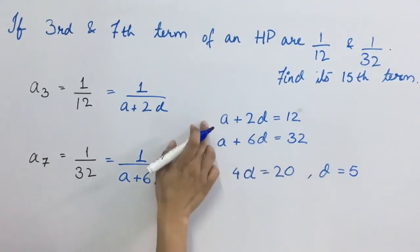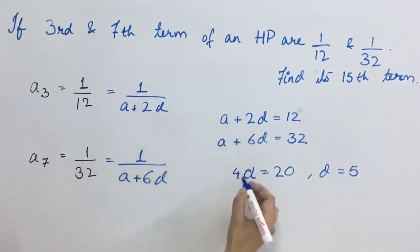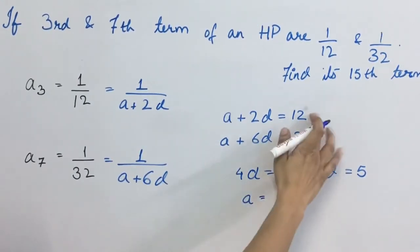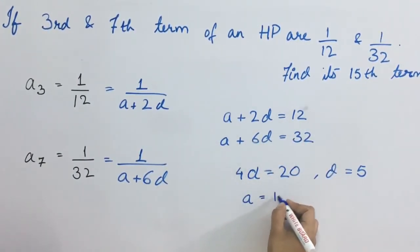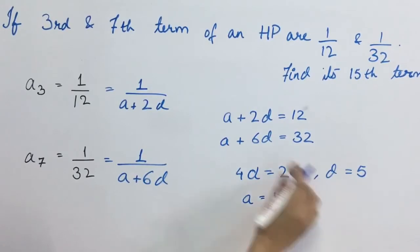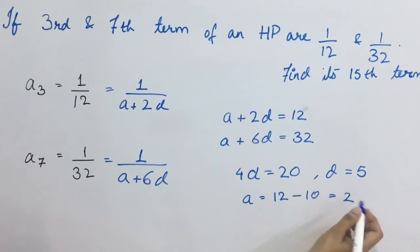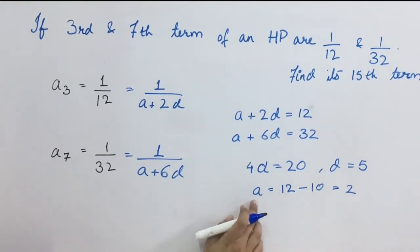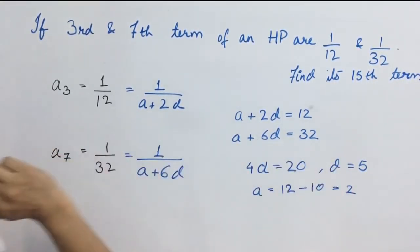Now this value we will substitute in any one equation. We will get the value for A. Suppose I consider the first equation, so 12 minus 2 times of D, that is 5, is 10. So this value is 2. So we got A value and D value.